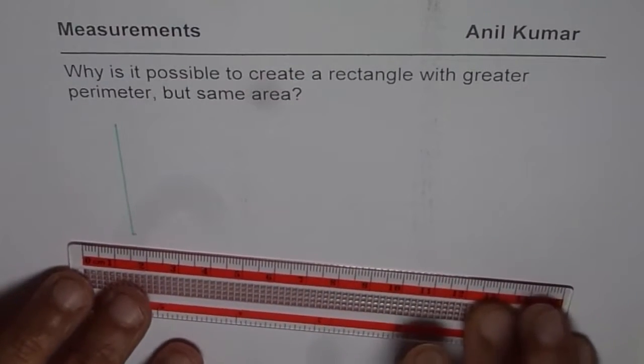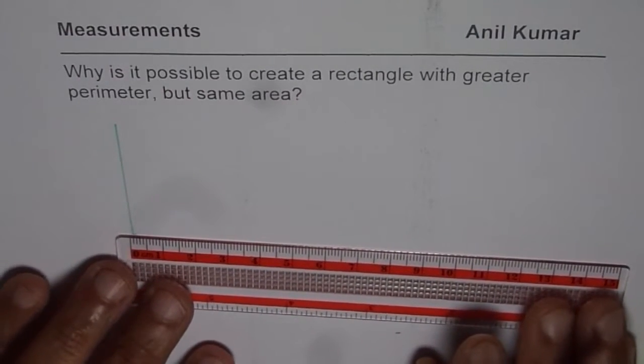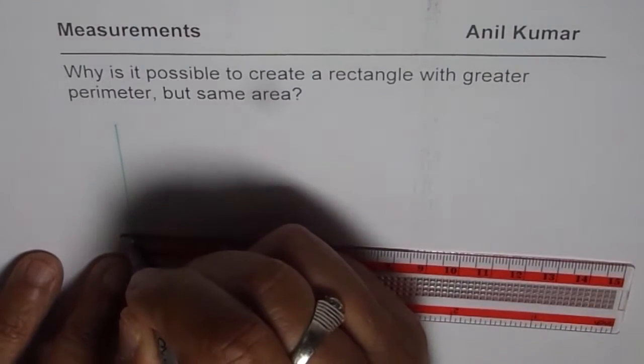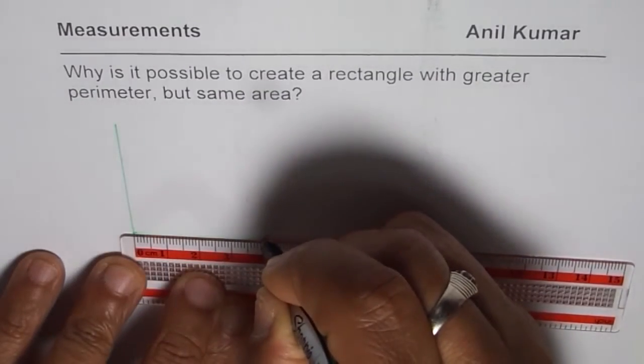So, we will make a square of length and width equals to 4 centimeters. So, we have this 4 by 4. 4 by 4.